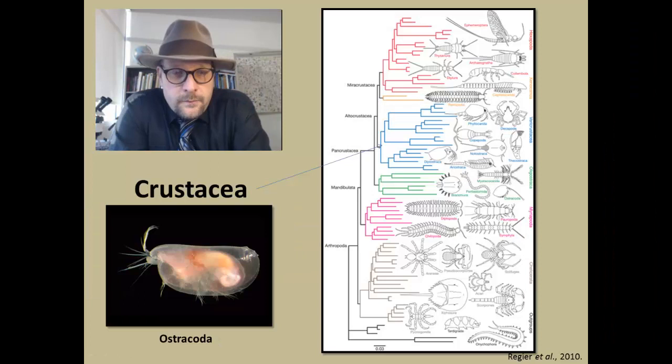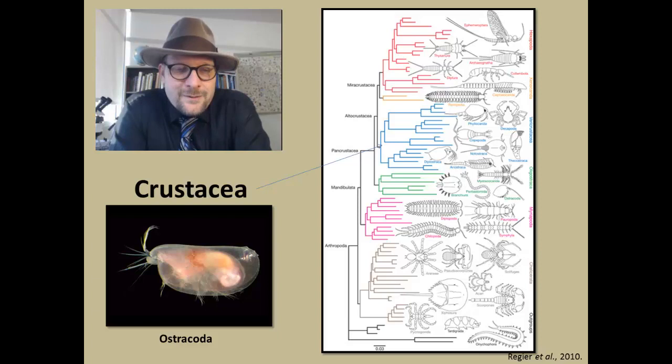Now the next group that we have in here are the Ostracoda—these are sometimes referred to as seed shrimp. The Ostracoda have actually a fabulous fossil record, and they make it into freshwater systems. The Ostracoda are basically shelled shrimp, basically is what they are. They have a hard calcium carbonate shell that they produce on either side of them to help protect them.